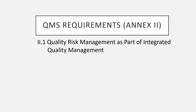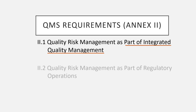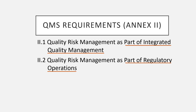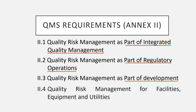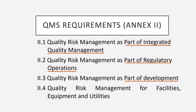Annexure 2.1 says quality risk management should be part of integrated quality management. Point 2 says it is part of regulatory operations; point 3 says part of development; and point 4 says it is a part of facilities, equipment, and utilities. Most of your quality management systems need to be addressed taking into consideration the quality risk management principles and examples given in this guideline. Try to modify your systems to gain better advantage and understanding of this guideline.